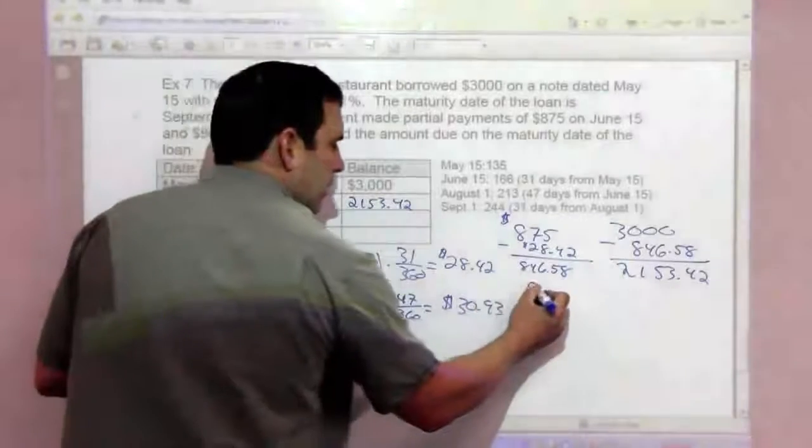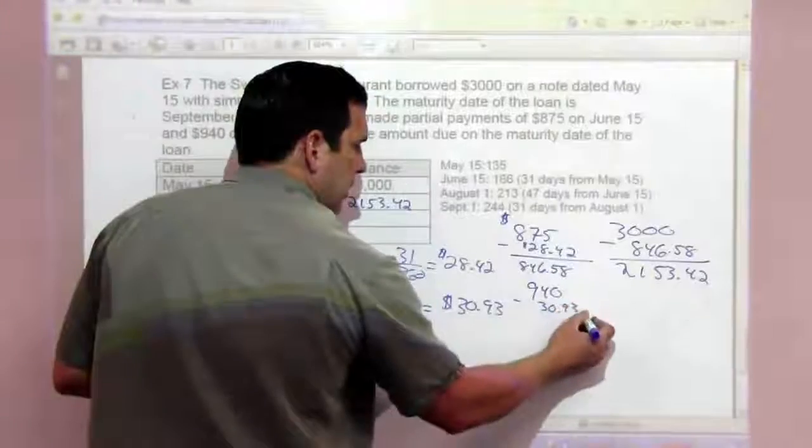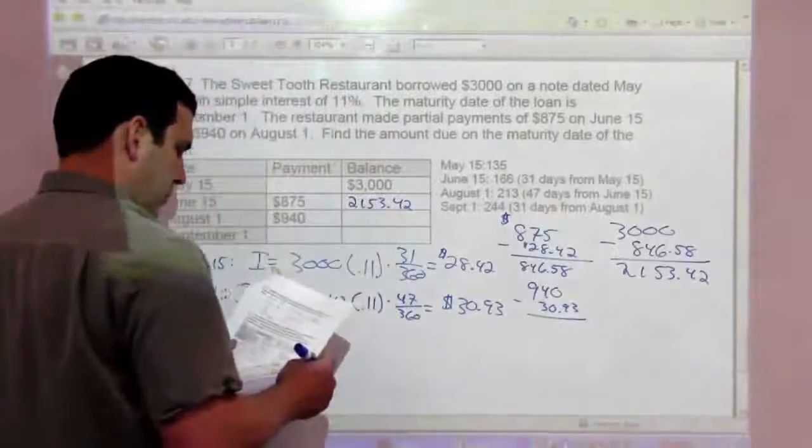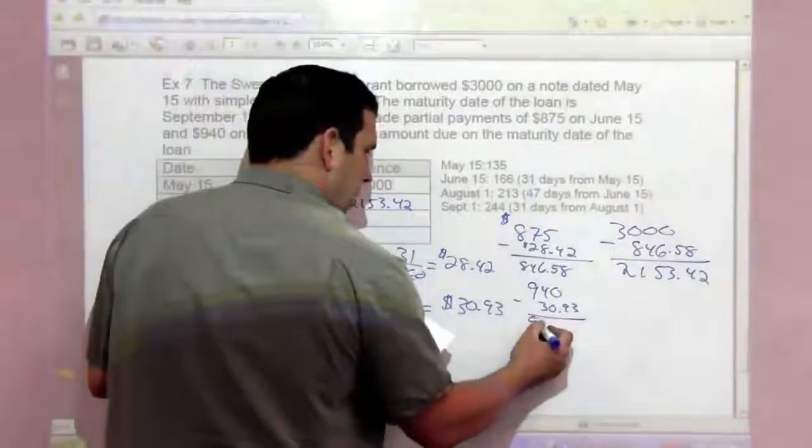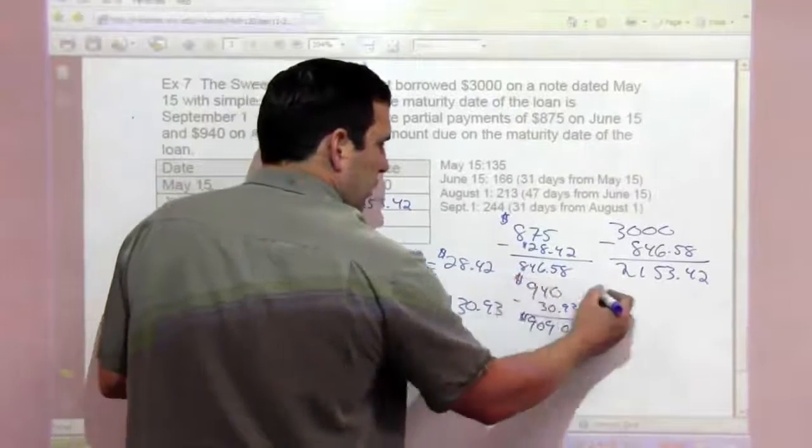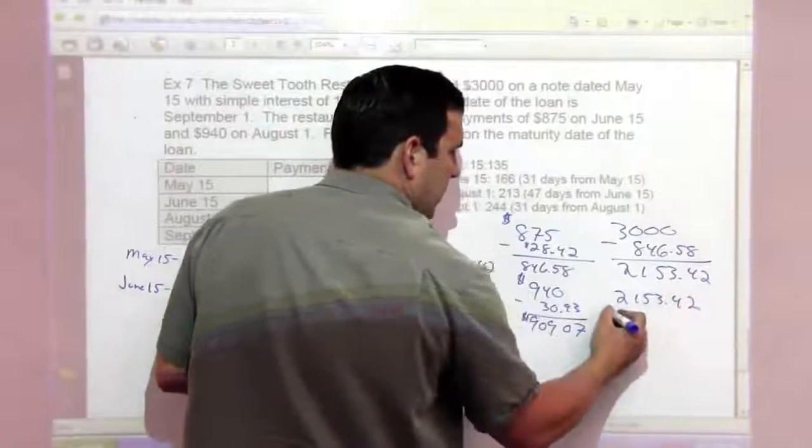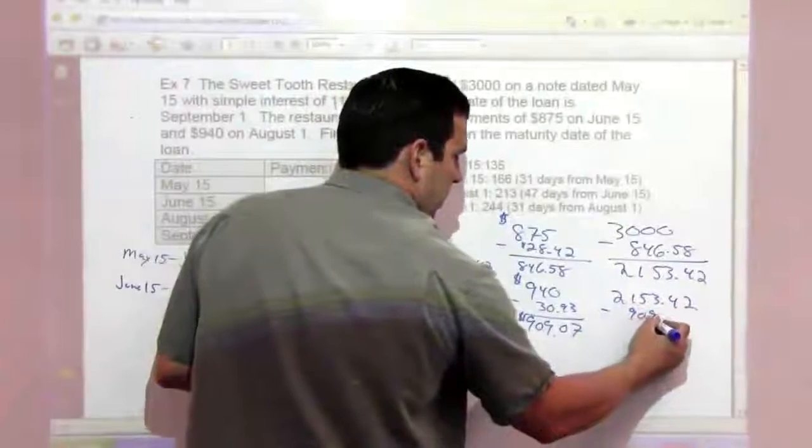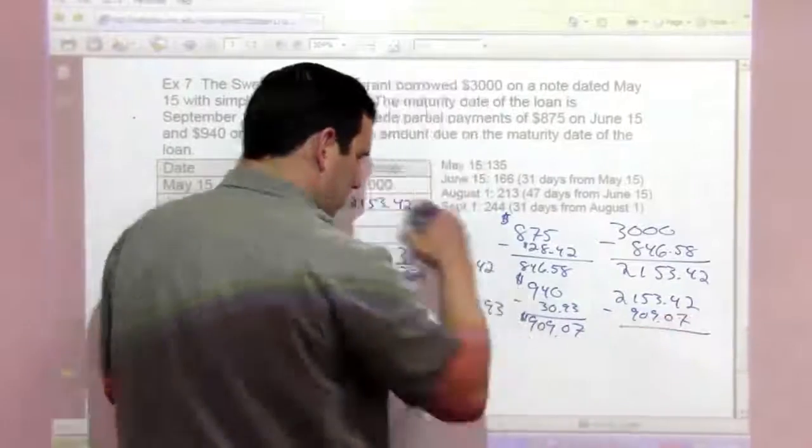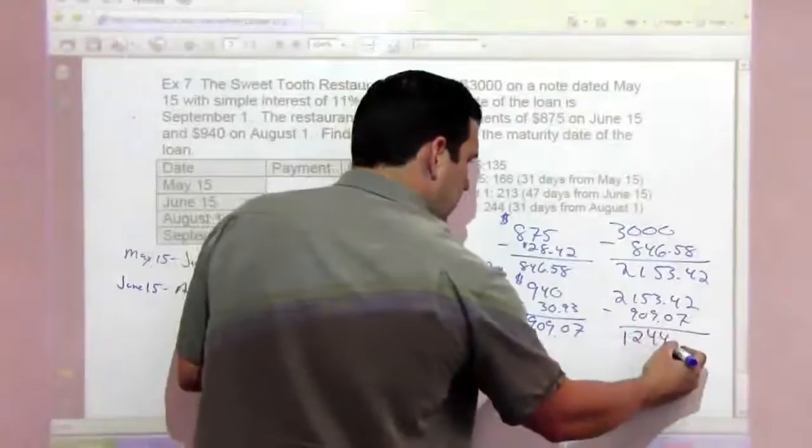So from the payment of $940, we subtract $30.93, we get $909.07. So from the balance of $2,153.42, we subtract $909.07, we have $1,244.35.